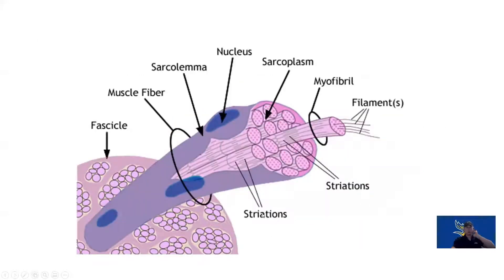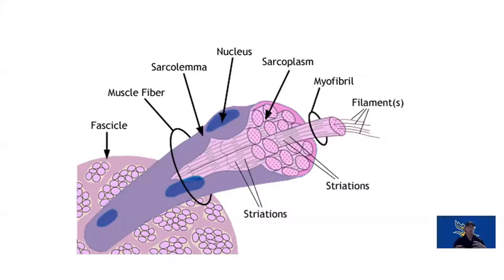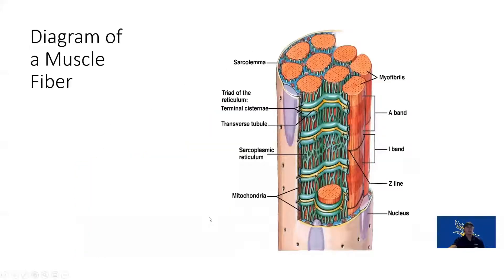From another split view, we can start to see the striations — this is why skeletal muscle is called striated muscle. Those striations come from the visibility of the A-bands and I-bands from the arrangement of thick and thin filaments next to each other.